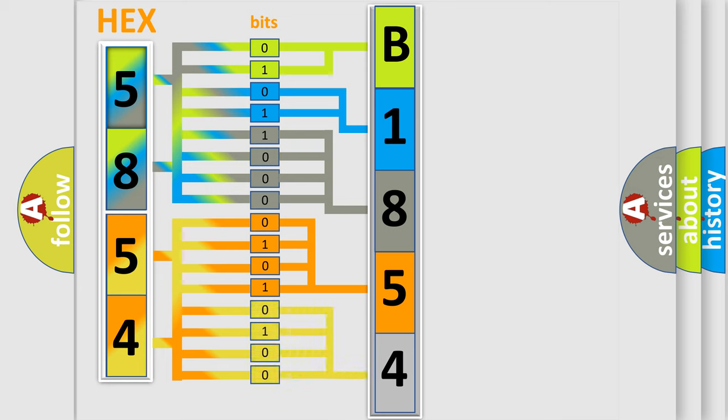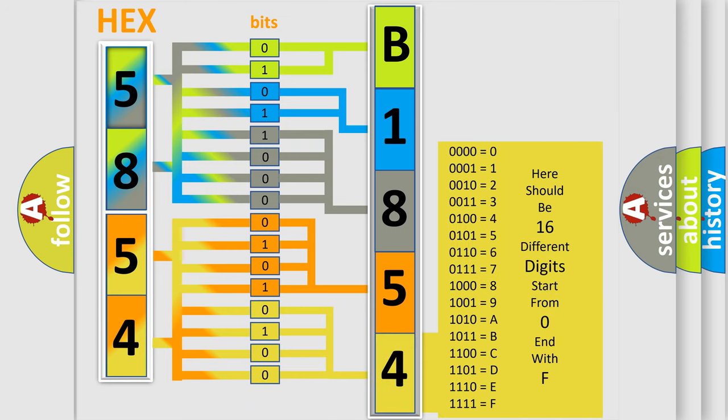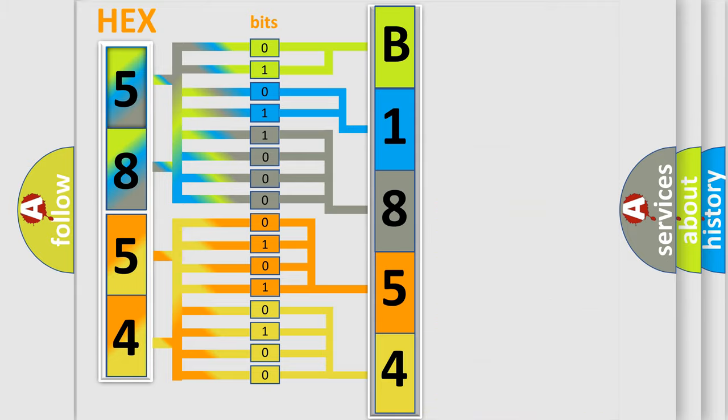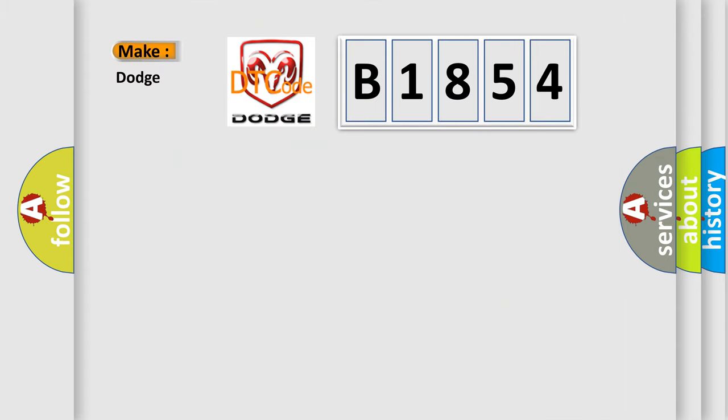A single byte conceals 256 possible combinations. We now know in what way the diagnostic tool translates the received information into a more comprehensible format. The number itself does not make sense to us if we cannot assign information about what it actually expresses. So, what does the diagnostic trouble code B1854 interpret specifically?